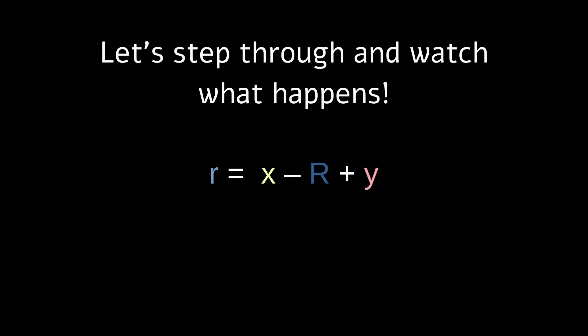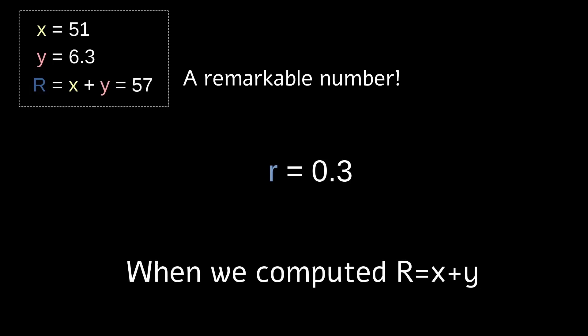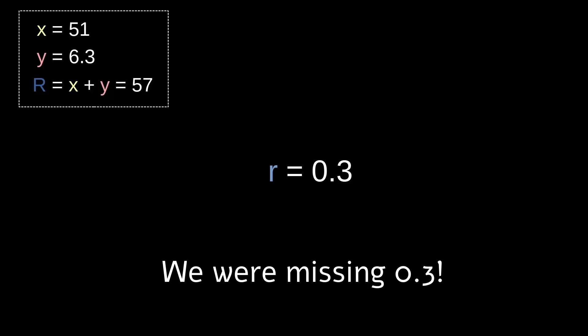If we step through this thing, we're going to see something strange happen. The first part of the expression is x minus capital R. Now, x from before was 51. And capital R was 57. 51 minus 57 equals negative 6. Moving on to the next part of the expression, we add on the y. So we've got negative 6 plus 6.3. Well, negative 6 plus 6.3 equals 0.3. And that is a remarkable number, 0.3.